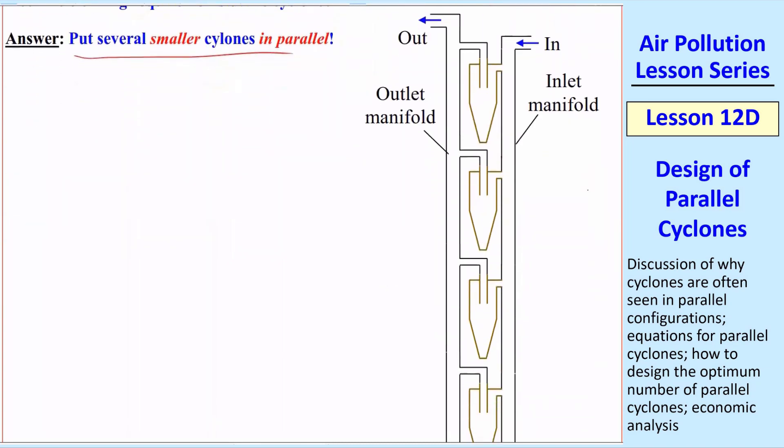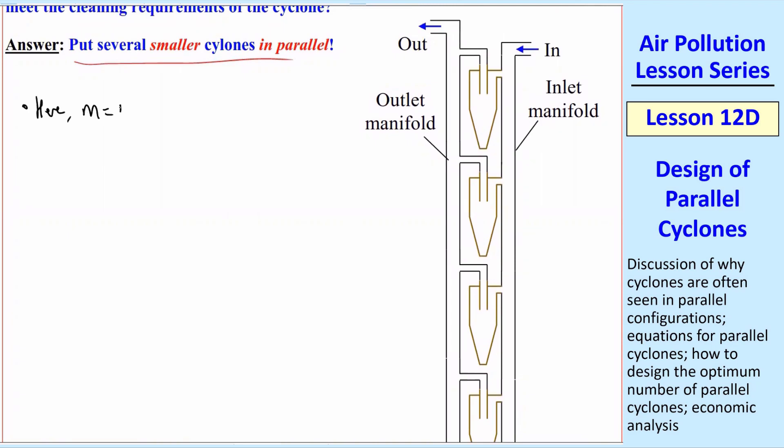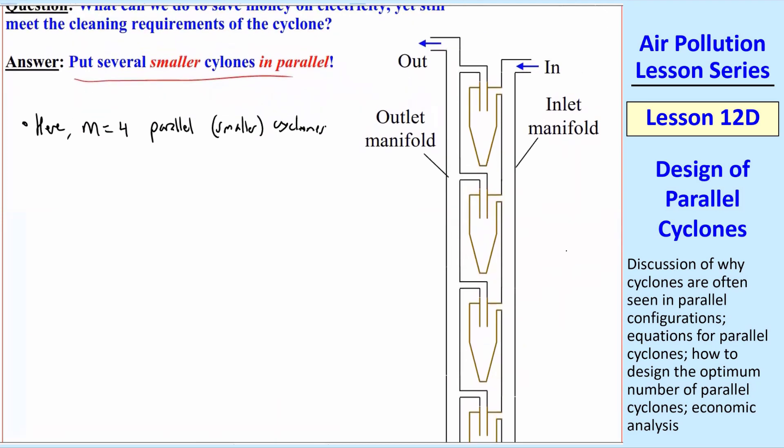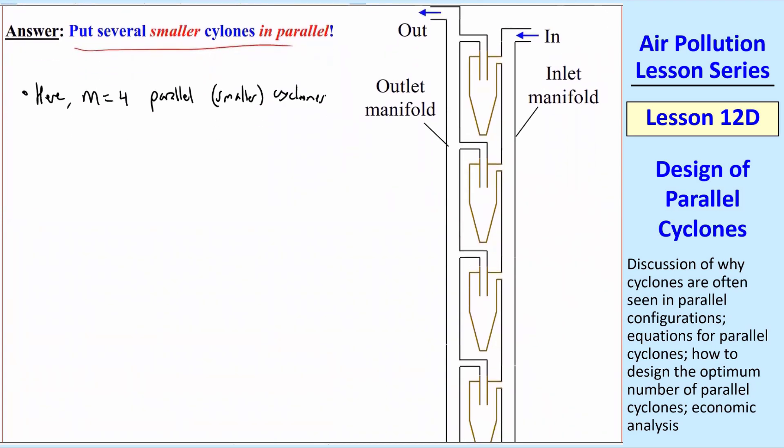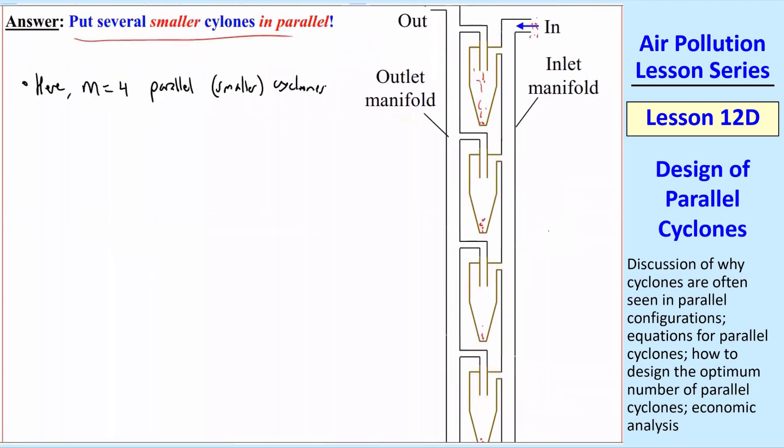I have a sketch here where we have an inlet manifold, and we split it into, in this case, four. I'll use M, and it's not mass. M equals four parallel smaller cyclones. So M can be anything we want. I just picked four out of the air, to give an illustration. So we have an inlet manifold, splits into four, and then we have an outlet manifold. So for each one of these, there's particles that are collected down here, and the cleaner air comes out. So we have the dirty air coming in with all these particles, and then we start collecting them in each of these. There are four identical cyclones, so that we can just treat one at a time and then multiply by four when we're done.